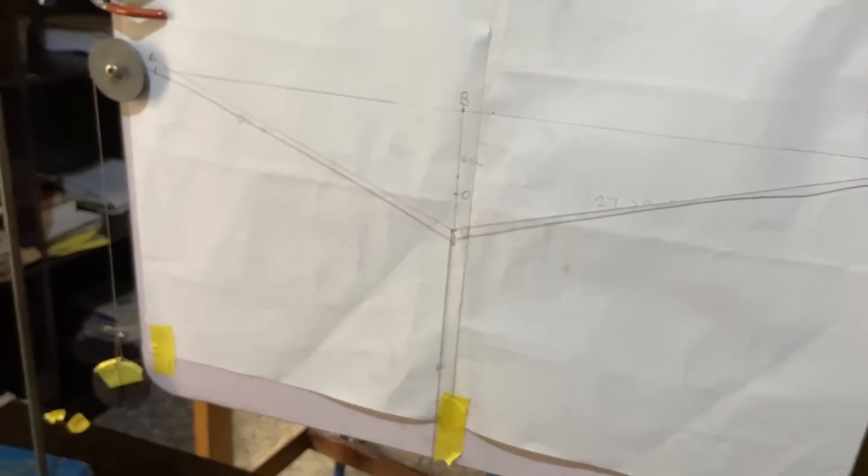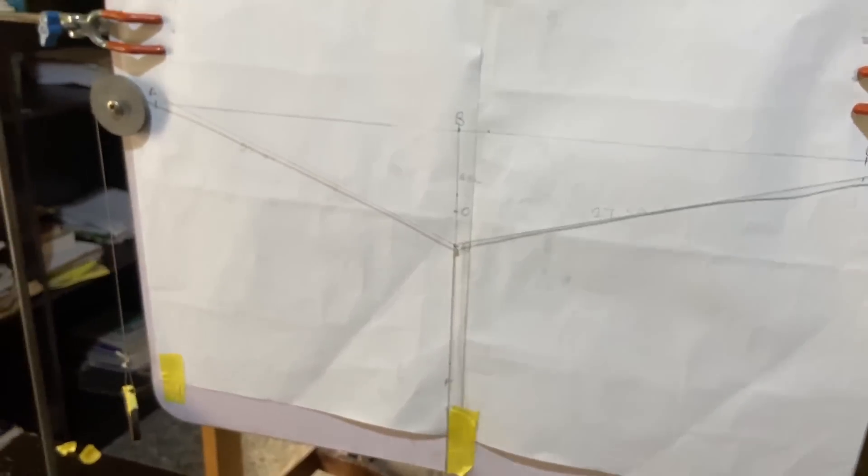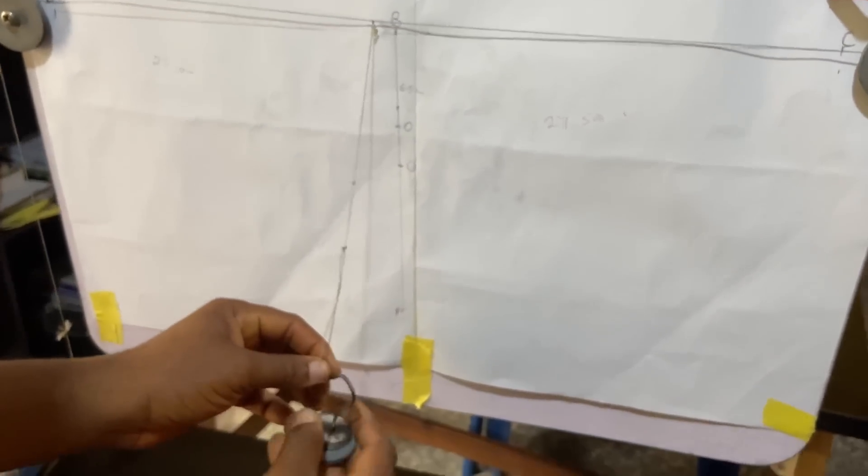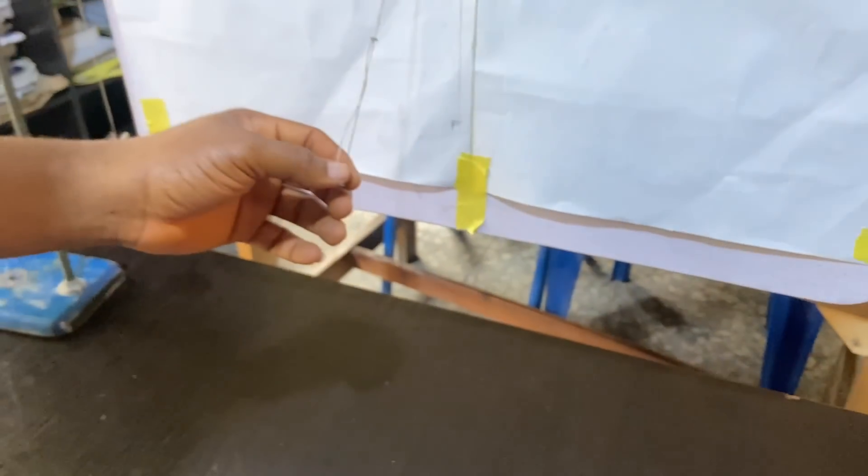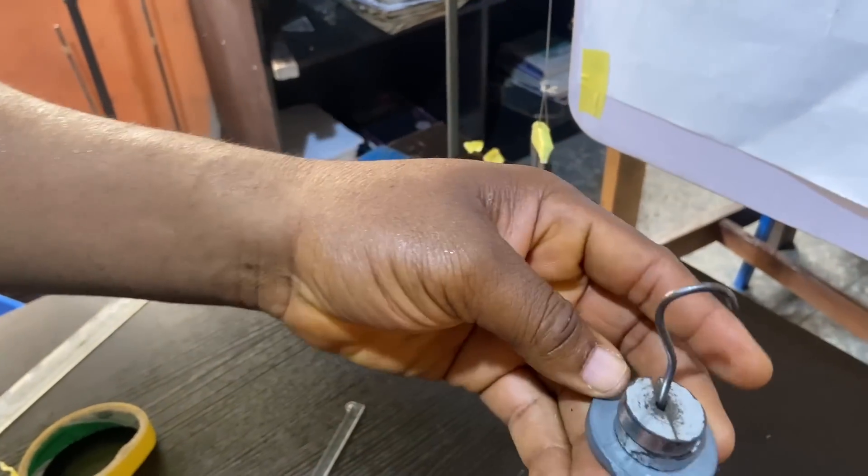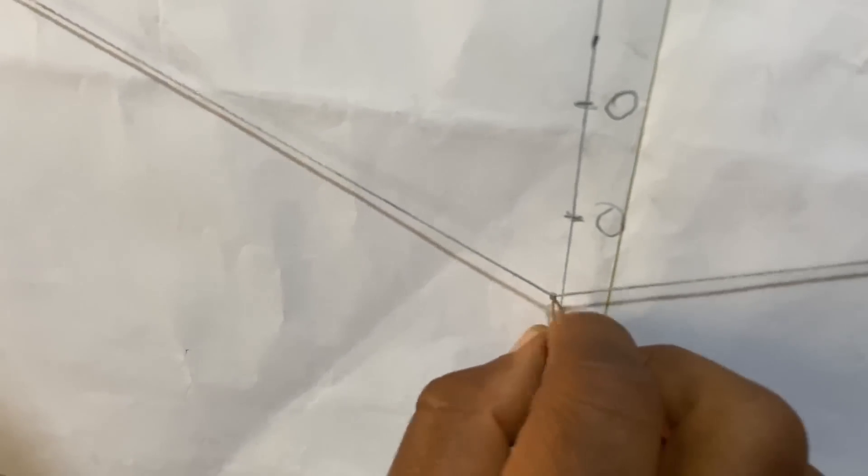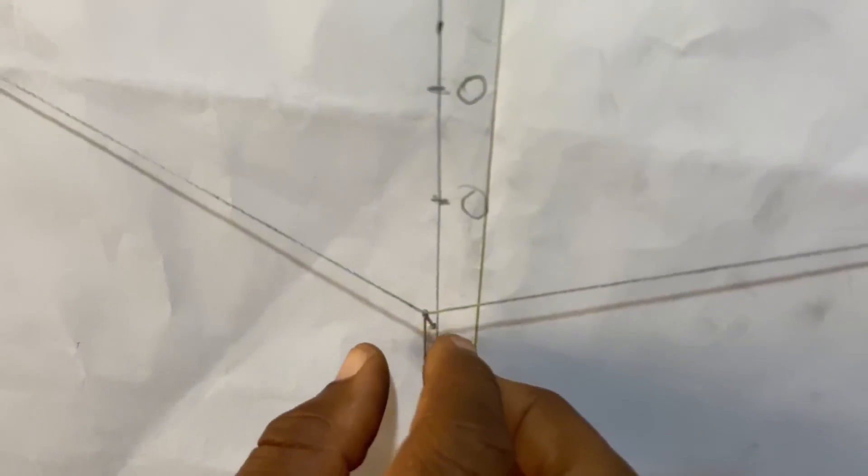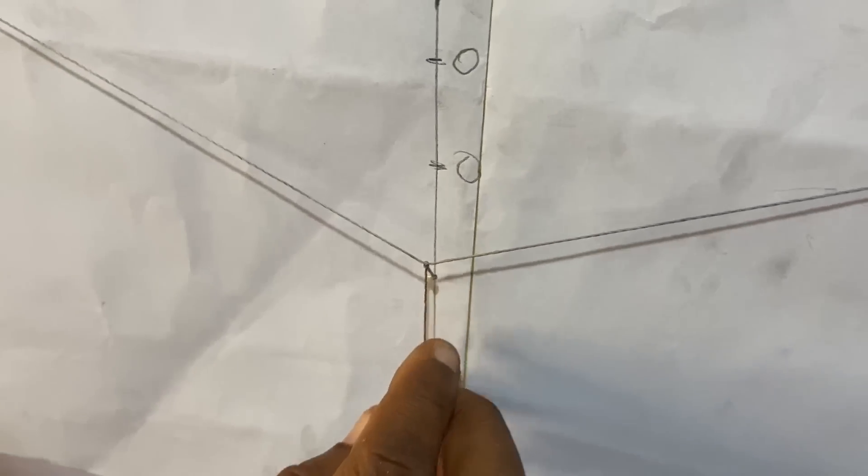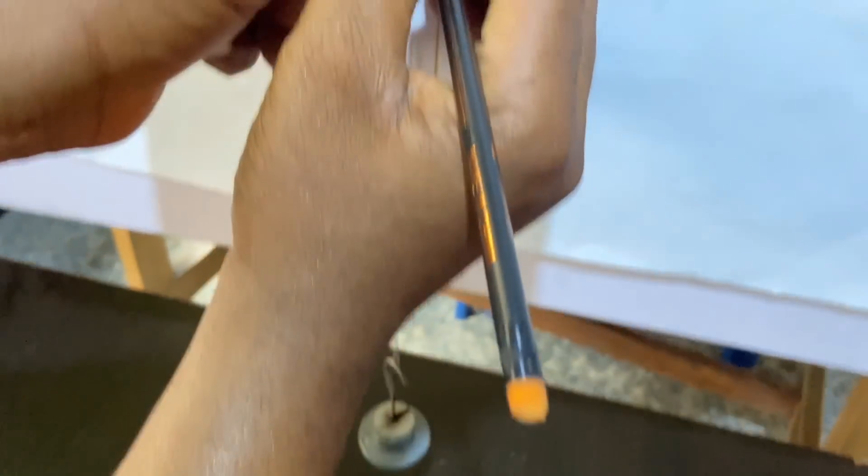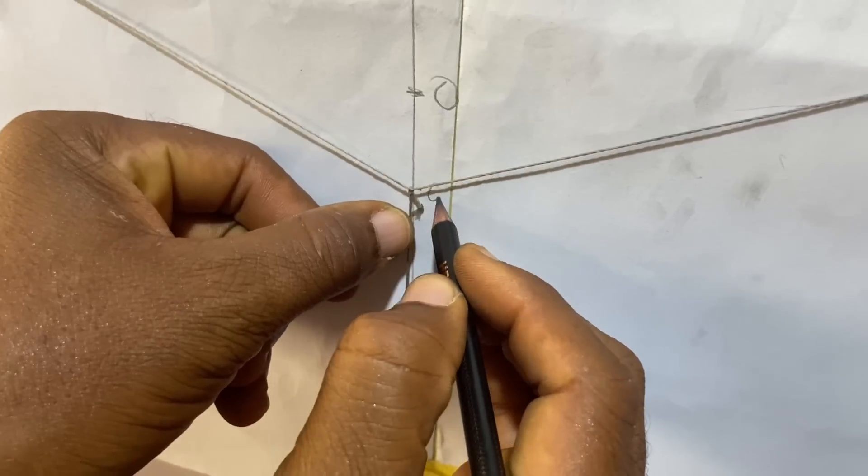Then I will measure again, then remove this again, put another one—110. Make it align. Mark the point O, mark the point O.